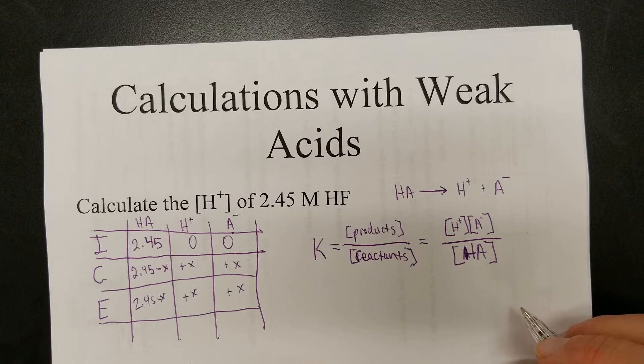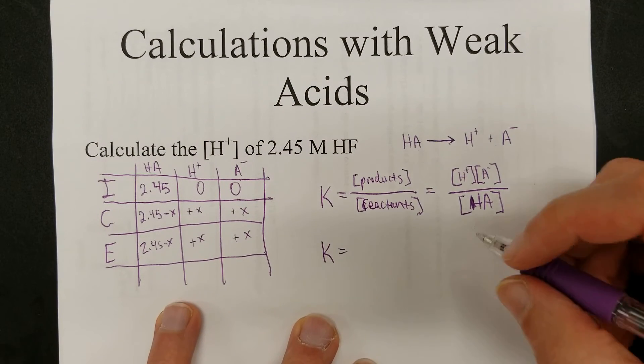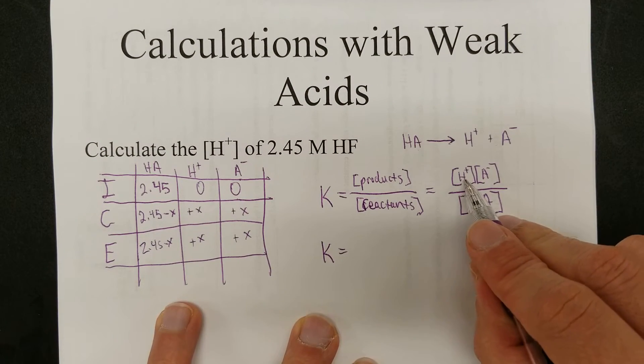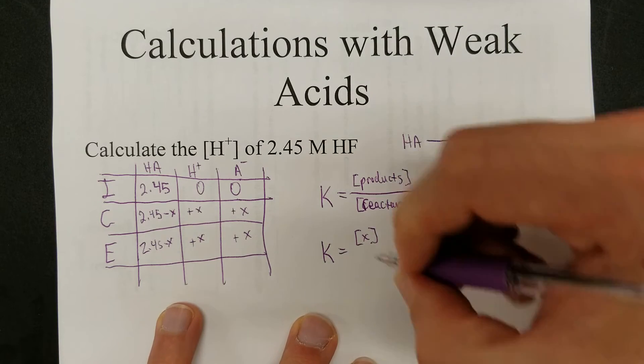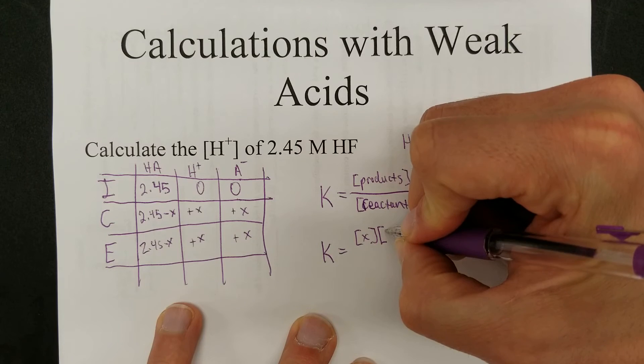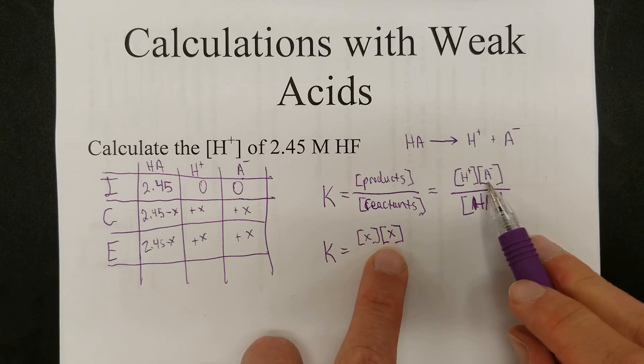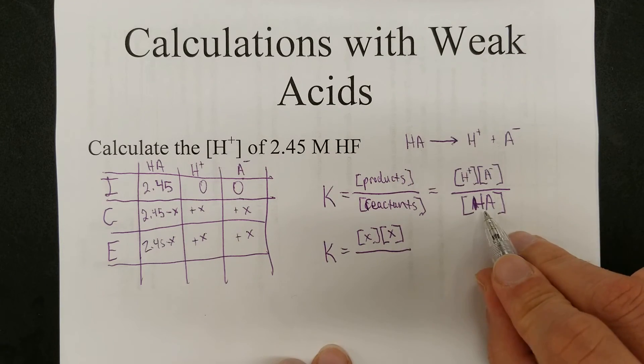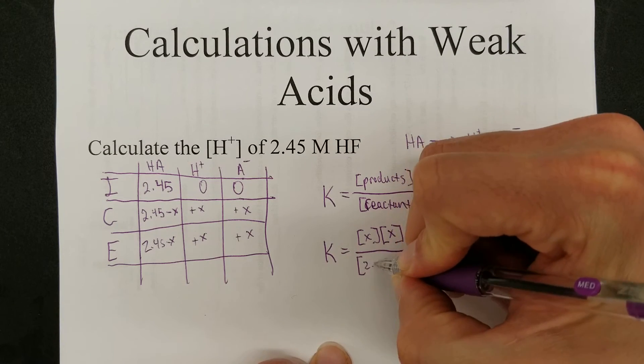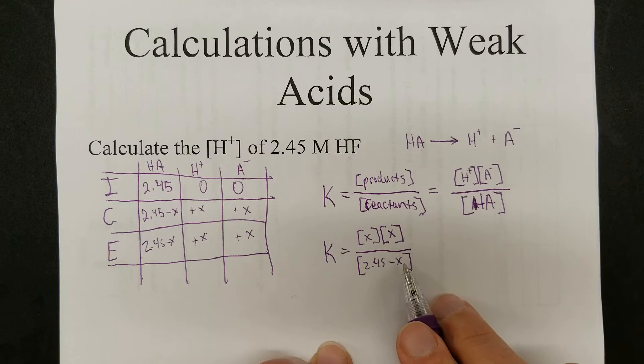So, let's plug the numbers in. K equals... Let's see. What's the hydrogen ion concentration? Some unknown number X. So there's your hydrogen ion concentration. Whatever the hydrogen ion concentration is, the anion concentration is the same. On the bottom, the concentration of the acid started at 2.45 moles per liter and then decreased by some amount X.